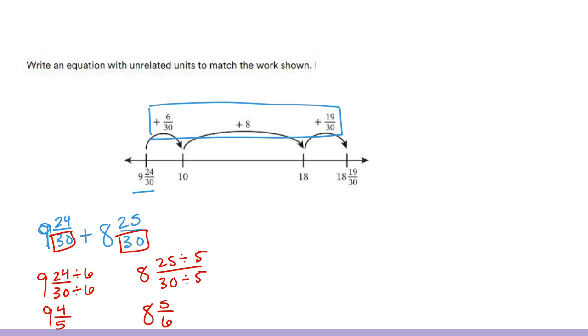Now, this gives us two unrelated units. 9 and 4 fifths, our fifths are unrelated to my 8 and 5 sixths. So, that solves the work shown.